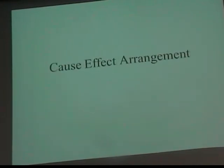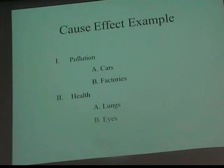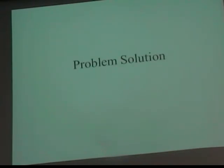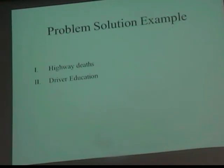The next two are simply what they say. Cause and effect: first you show the causes, then the effects — discuss conditions and then point to the results. For example, the causes of pollution are cars and factories, and the effects are on your health, your lungs, and your eyes. Next is problem-solution: first you address the problem, then the solutions. Keeping it simple — the problem is deaths on the highway, and a solution might be driver's education or no speed limits.